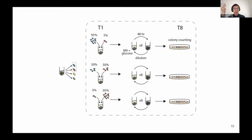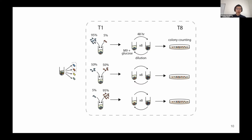To test these two ideas, I am experimentally measuring pairwise interactions. For instance, this community has four strains. We take one pair and manipulate the initial frequencies — 95:5, 50:50, and 5:95. We grow these pairs in exactly the same environment as community assembly, which is simple M9 glucose medium. After serial passage, we plate the final cultures on solid agar plates, and because their colony morphologies are different, we can count the colonies and determine the final relative frequency.